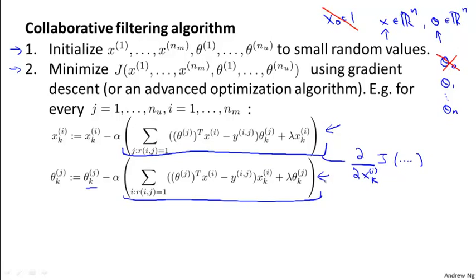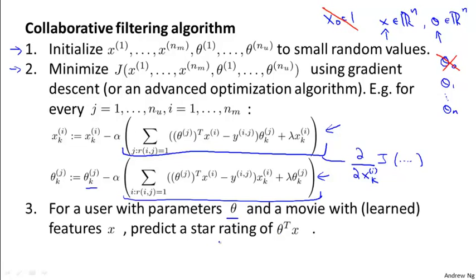We use gradient descent to minimize the cost function J with respect to the features x and with respect to the parameters theta. Finally, given a user with parameters theta_j and a movie with learned features x_i, we predict that user j will rate movie i with a star rating of theta_j^T * x_i.